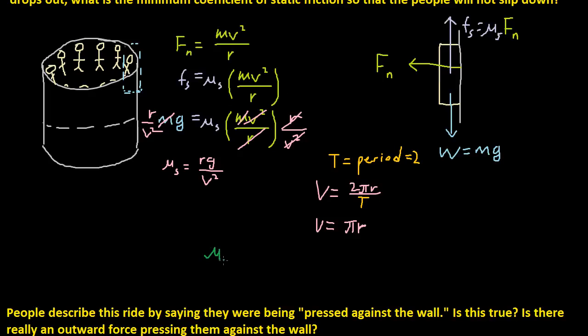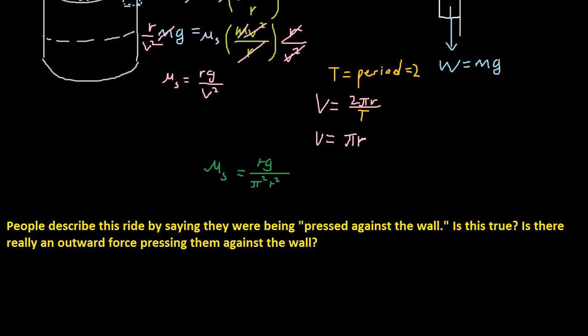So mu of s equals rg over pi squared times r squared. And one of the r's cancel out. So r's cancel out with one of these, so this r goes away and this r goes away. The static friction is just g over pi squared times r.